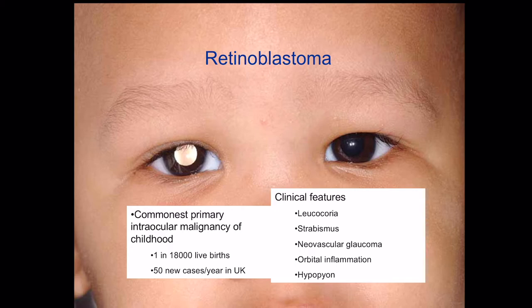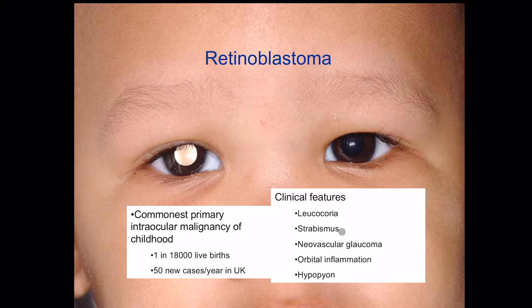Retinoblastoma is the commonest primary intraocular malignancy of childhood. It occurs in one in 18,000 live births — about 50 new cases in the UK, of which about half are managed in London. The clinical features are leukocoria, squint — so any child with a squint should have a fundus check — and sometimes children present with neovascular glaucoma, orbital inflammation, or a hypopyon.